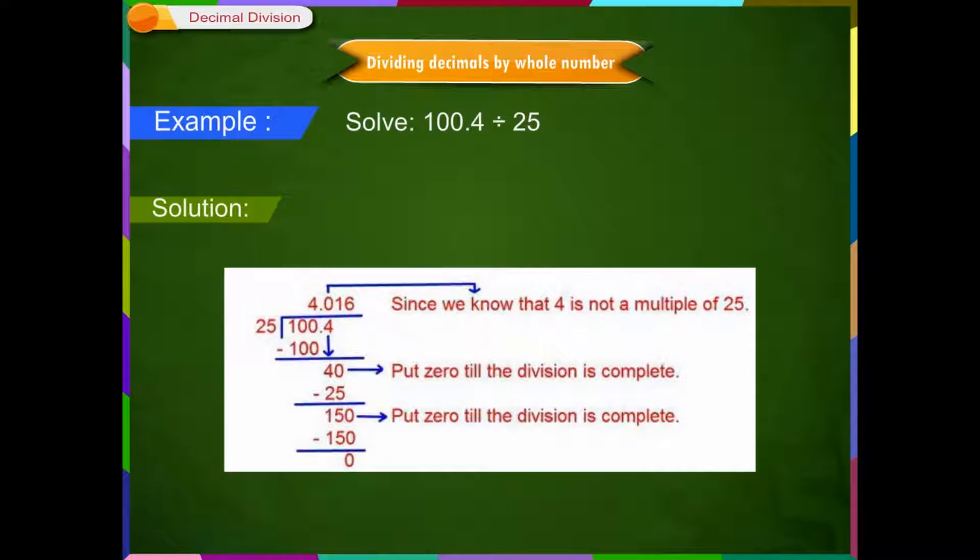Step 2: We have reached the tenth place, so place a decimal point in the quotient here. Now take 4 down. 4 is not divisible by 25 as it is smaller than 25, so put a 0 in the quotient since we know that 4 is not a multiple of 25.